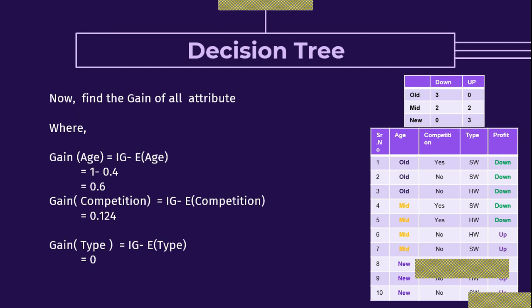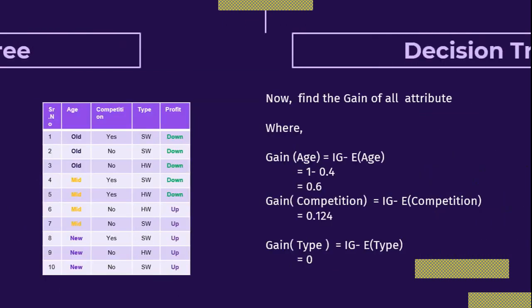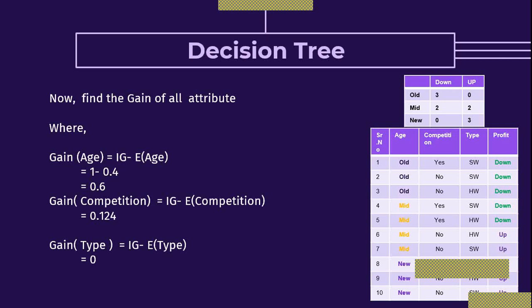Gain of competition = IG − entropy of competition = 1 − 0.876 ≈ 0.124. And the gain of type attribute is 0. So the attribute age has the highest gain at 0.6, compared to competition at 0.124 and type at 0. Therefore I am keeping attribute age as the root of the tree.